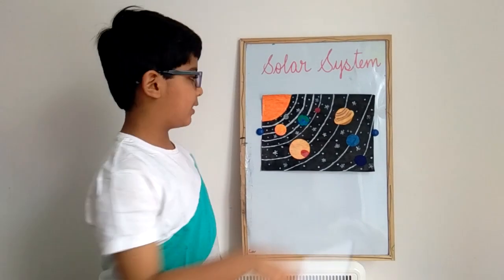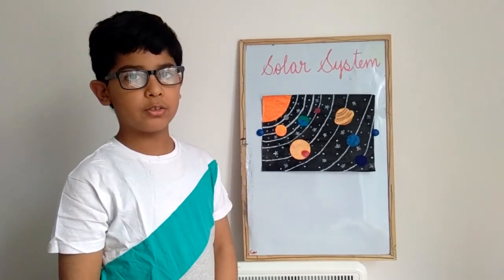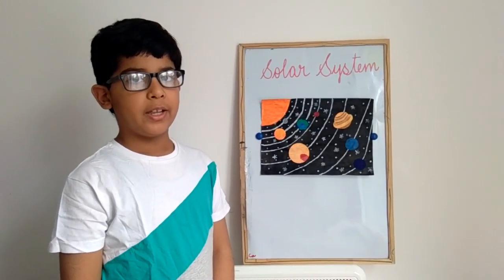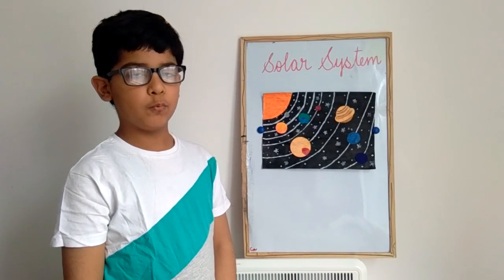The next planet is Earth. Earth is where life is only possible. It has one moon. It's 30% land and the rest is water.